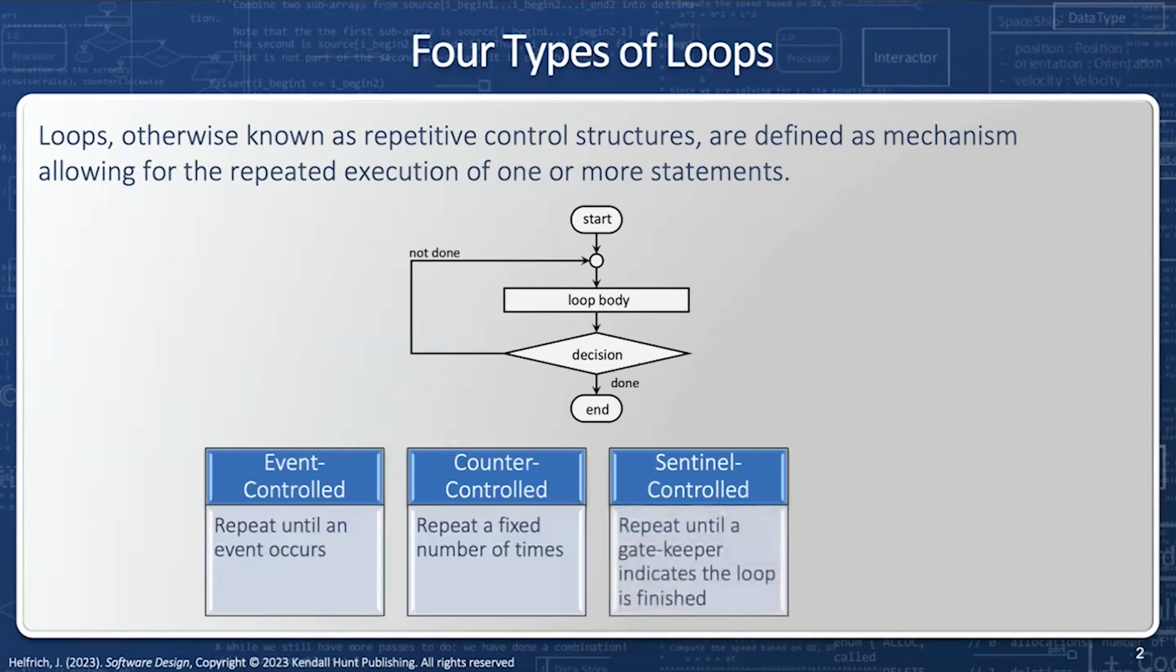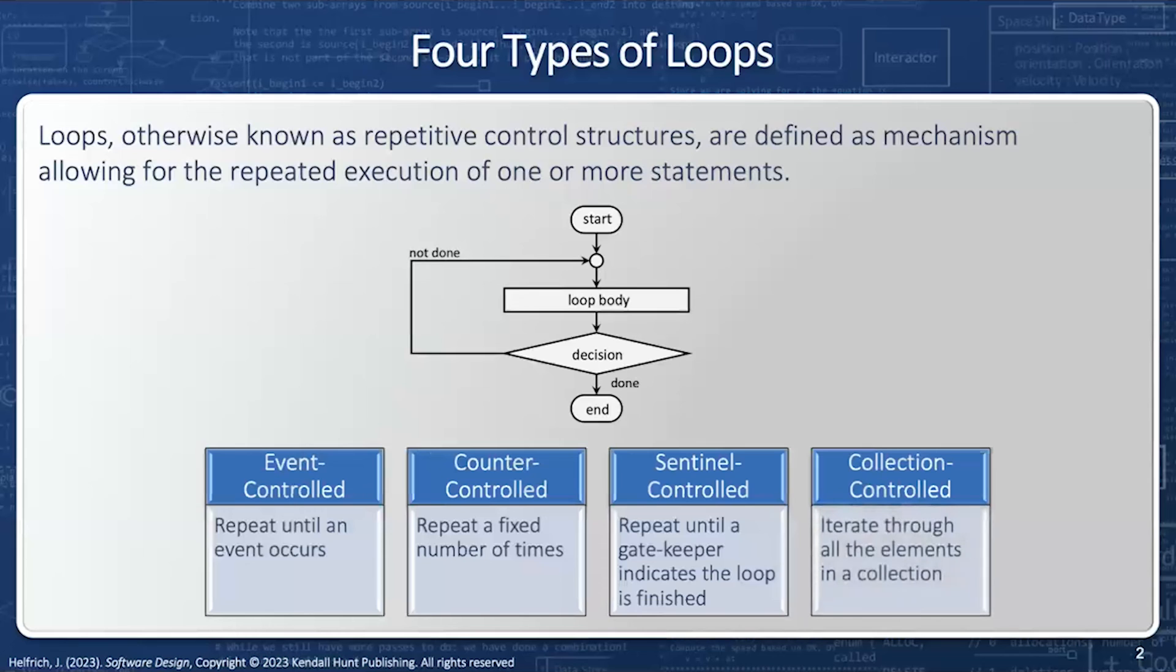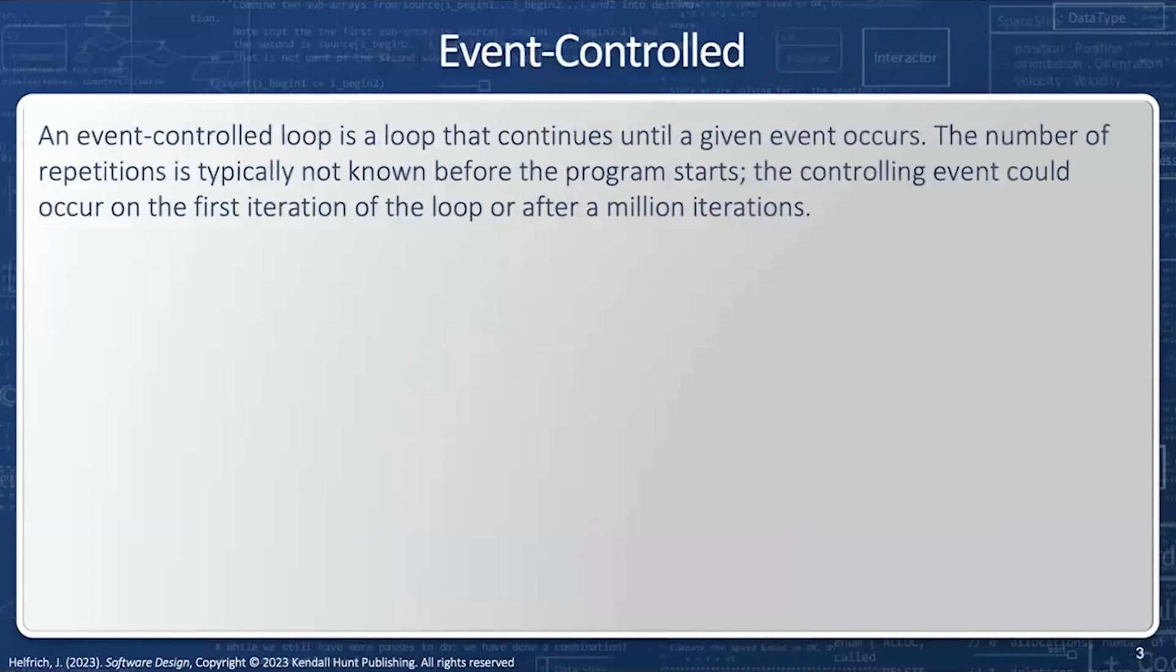Next, we have a sentinel control loop. We're going to repeat until a gatekeeper, otherwise known as a sentinel, indicates the loop is finished. And finally, we have a collection control loop. We're going to iterate through all the elements in the collection. Let's take a look at these four different types of loops in turn.